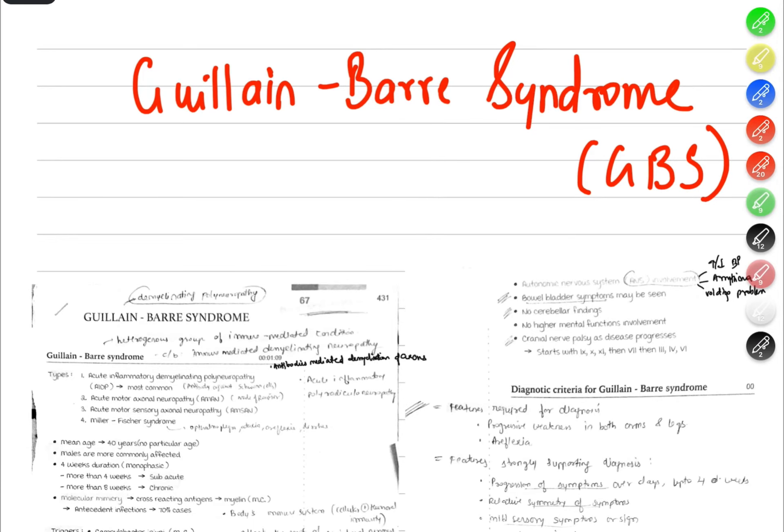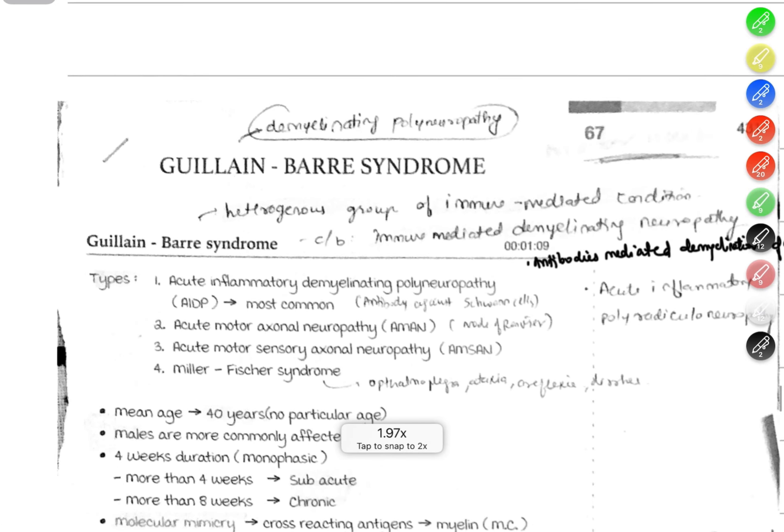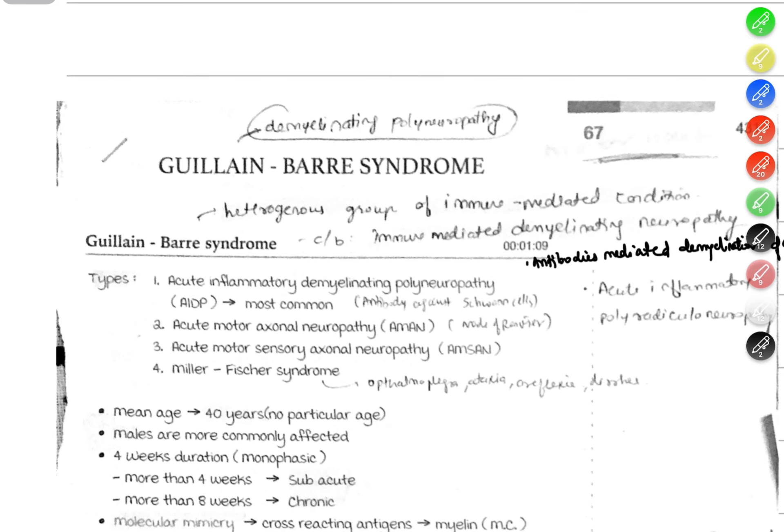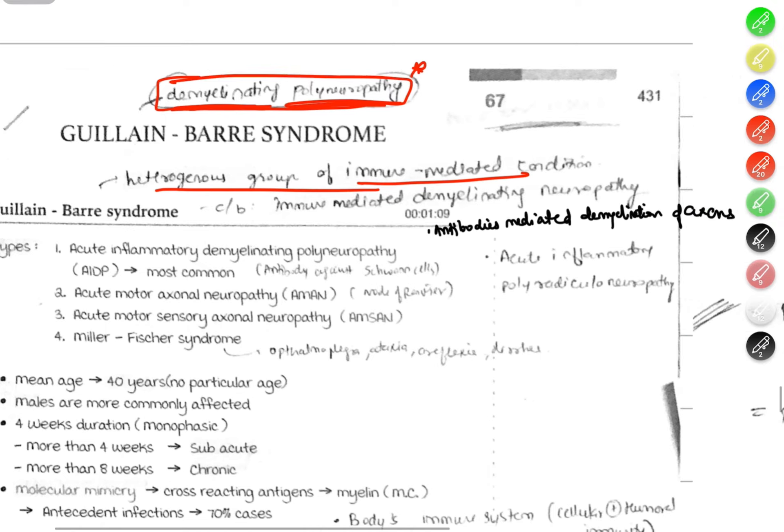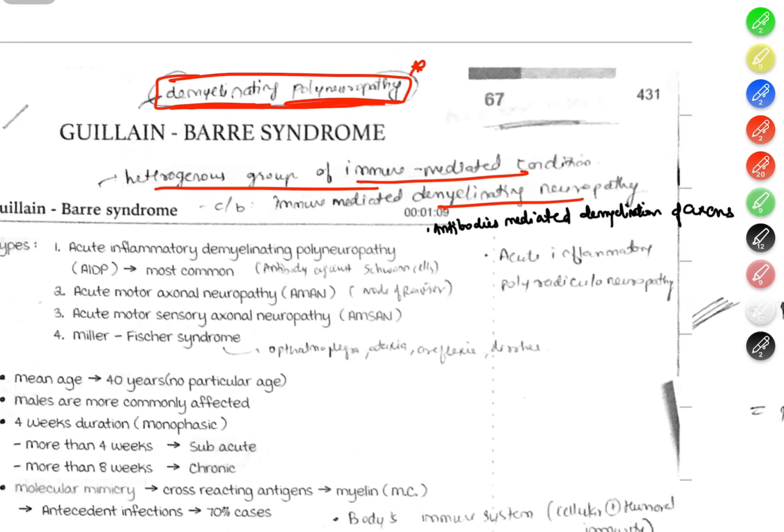Now let's see about Guillain-Barré syndrome or GBS. GBS is a demyelinating polyneuropathy. This means the myelin sheath in the nerve is destroyed and many nerves are involved. It is a heterogeneous group of immune-mediated conditions characterized by immune-mediated demyelinating neuropathy.